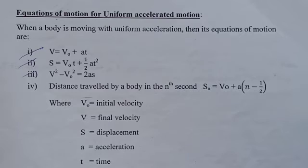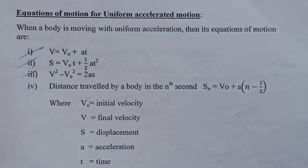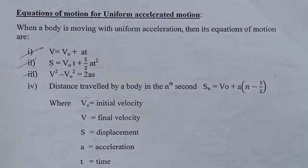The fourth equation: distance travelled by a body in the nth second is S_n = V₀ + A(n − ½). Here, V₀ represents initial velocity, V represents final velocity, S denotes displacement, A denotes acceleration, and T denotes time taken.